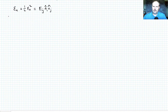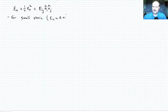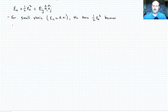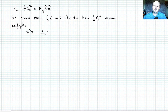Now, for the small strain case — where εn is on the order of 1% — the term one half εn² becomes negligible. So we can write that the nominal strain εn is approximately equal to eij ni nj. This links the familiar ΔL/L to the Lagrange finite strain tensor in the small strain regime.